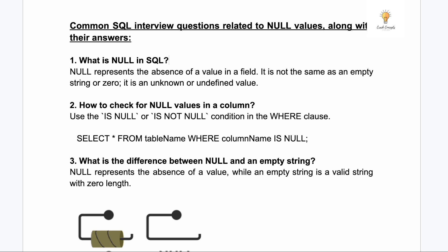First question — very basic: what is NULL in SQL? NULL is different from zero and also different from an empty string. An empty string is still a value, zero is still a value, but NULL represents the absolute absence of a value in a field — it is an unknown or undefined value.